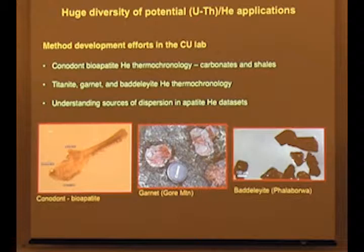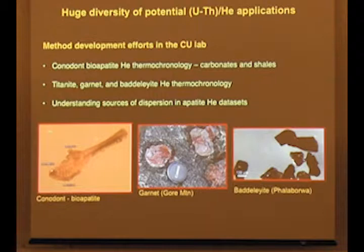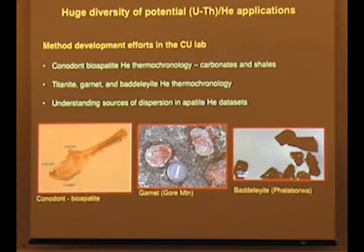I have a PhD student, Jackie Boffman, who's working on titanite thermochronology. We've also been working a little bit with garnet and bedellite thermochronology. Another focus has been trying to understand sources of dispersion in apatite helium datasets. As Jim mentioned, we know that radiation damage exerts a strong control on apatite helium retentivity, which can cause dispersion in datasets — but this is useful dispersion from which we can extract lots of thermal history information. So we're developing new ways to further extract information from dispersed datasets.